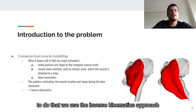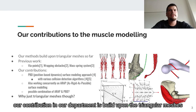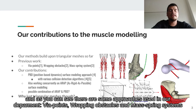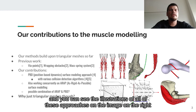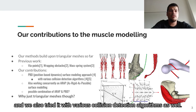To do that, we use the inverse kinematics approach. Our contribution in our department is built upon triangular meshes, and as you can see, there are some approaches used in our department: wire points, warping obstacles, and mass-spring systems. You can see the illustrations of all of these approaches on the image on the right. Our contribution is on the PBD algorithm, which is a position-based dynamic surface modeling approach, and we also tried it with various collision detection algorithms as well.